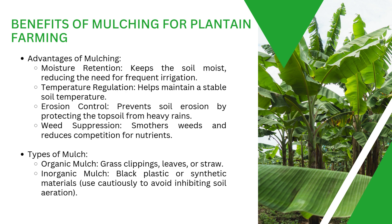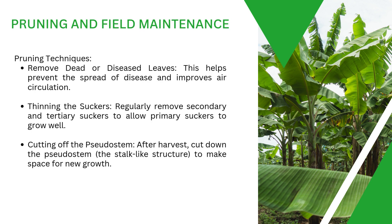The benefits of mulching are: it retains moisture, helps with temperature regulation to maintain stable soil temperature, reduces erosion from water overflow, and suppresses weeds by eliminating the competition for nutrients. There are organic mulches such as grass and straw, and inorganic mulches using synthetic materials — but use synthetic materials with caution. The more organic, the healthier the farm.